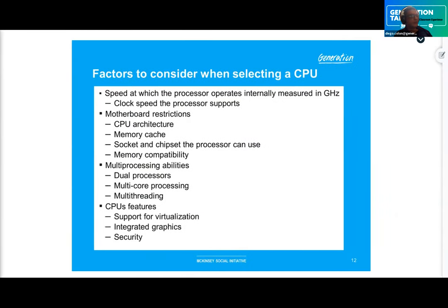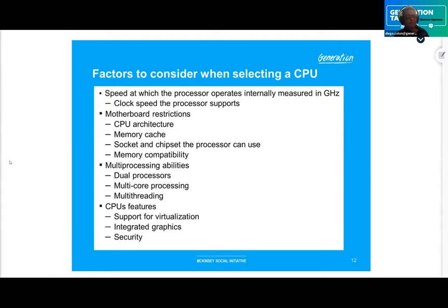Facts to consider when selecting a CPU: the speed at which the processor operates internally, measured in gigahertz — clock speed. Also consider motherboard restrictions, CPU architecture, memory cache, socket and chipset the processor can use, memory compatibility, multi-processing abilities — dual processor, multi-core processing, multi-threading — plus CPU features including support for virtualization, integrated graphics, and security.